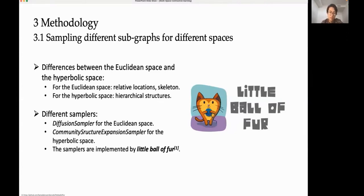Considering the different features, we propose to sample different subgraphs for embedding in different spaces. Specifically, for the Euclidean space, we choose diffusion sampler to acquire a more complete and unbiased view to serve as a skeleton of the input graph. For the hyperbolic space, we utilize community structure expansion sampler to extract hierarchical information and tree topology structures of the input graph. Both samplers are implemented by little ball of fur.